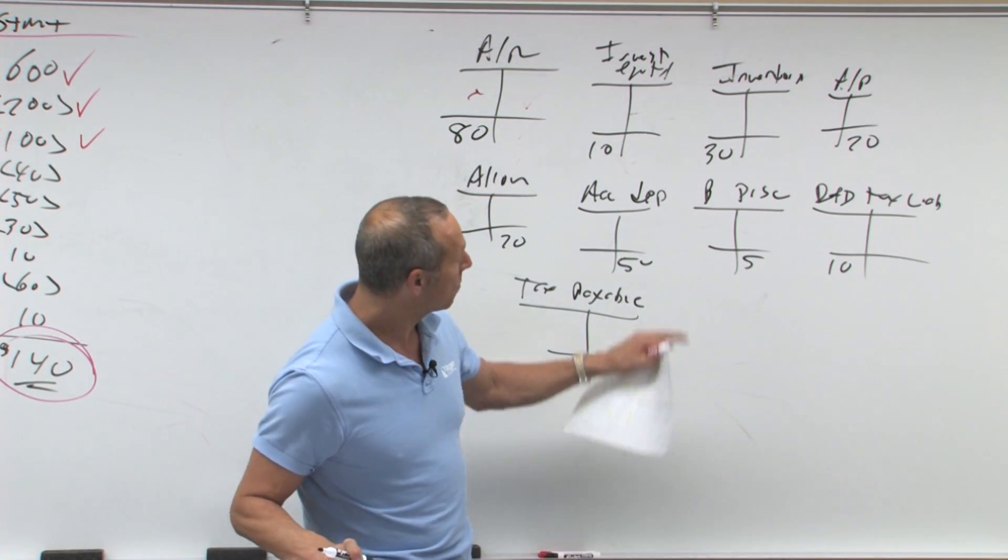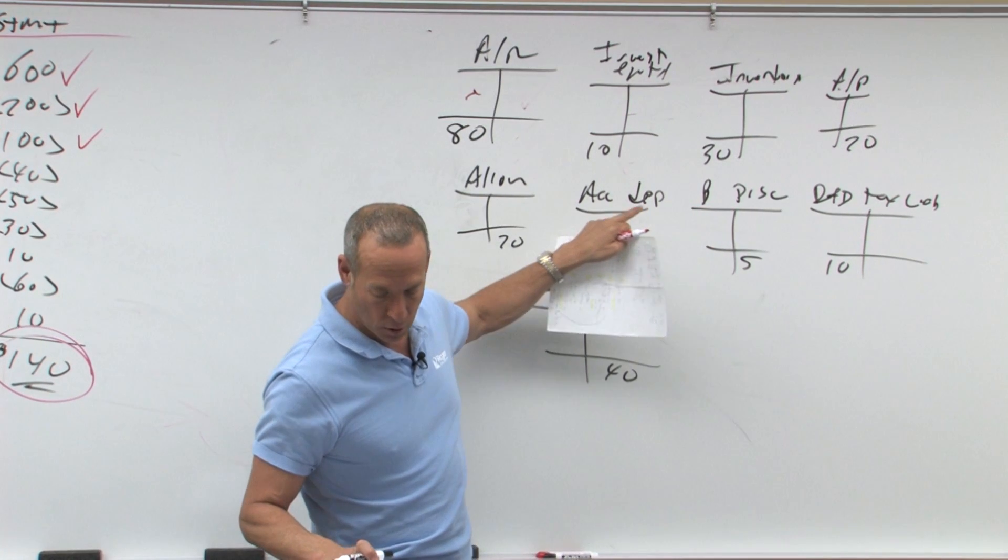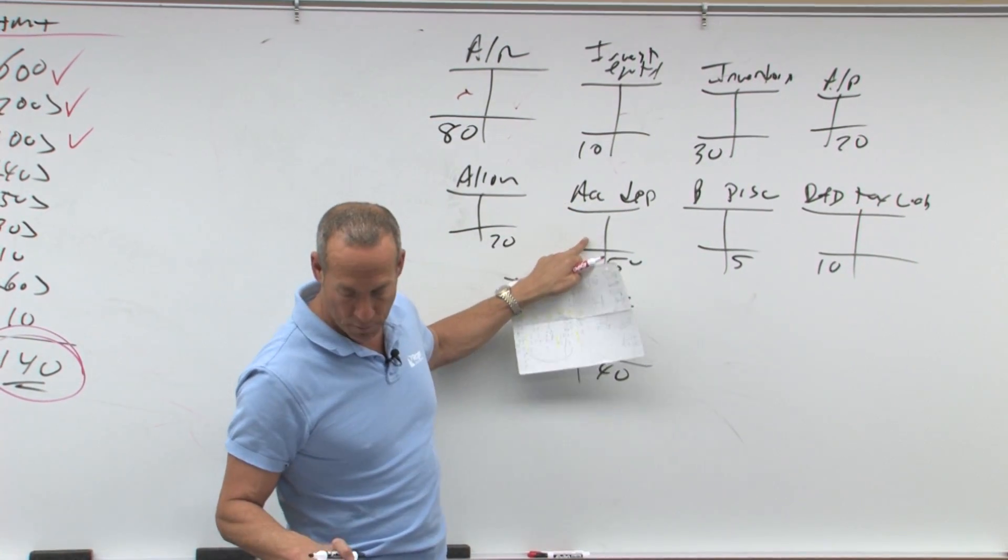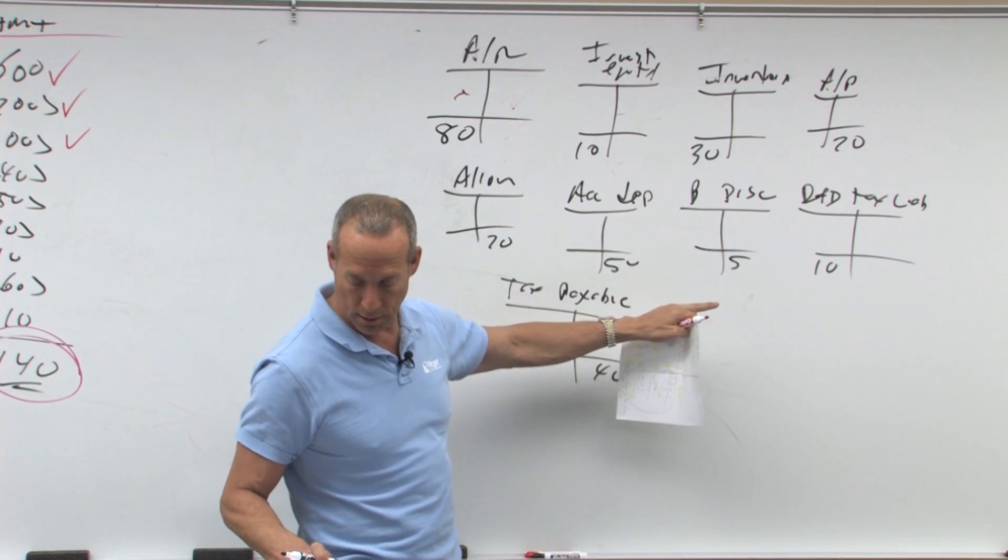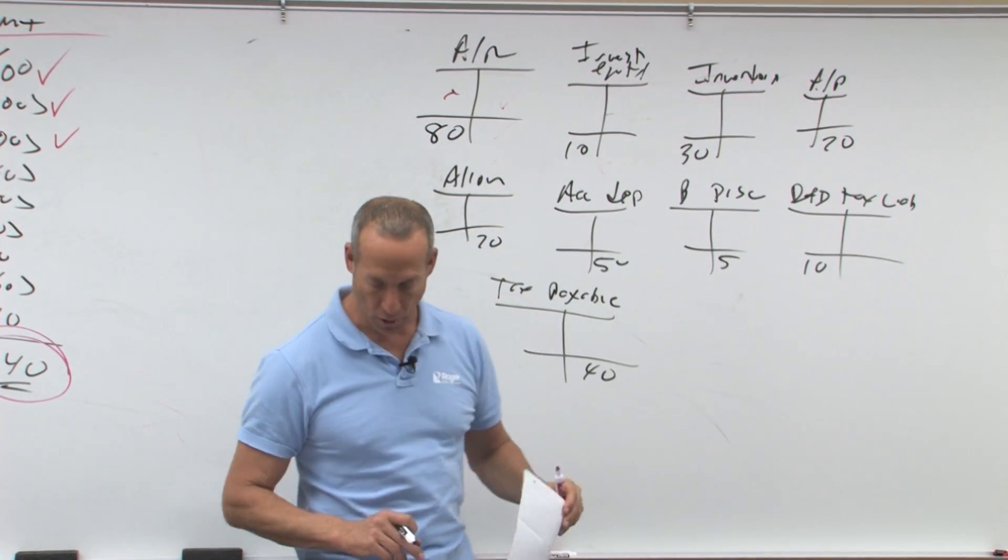So receivables, investment, inventory, accounts payable, allowance, accumulated depreciation, bond discount, deferred taxes, and taxes payable.